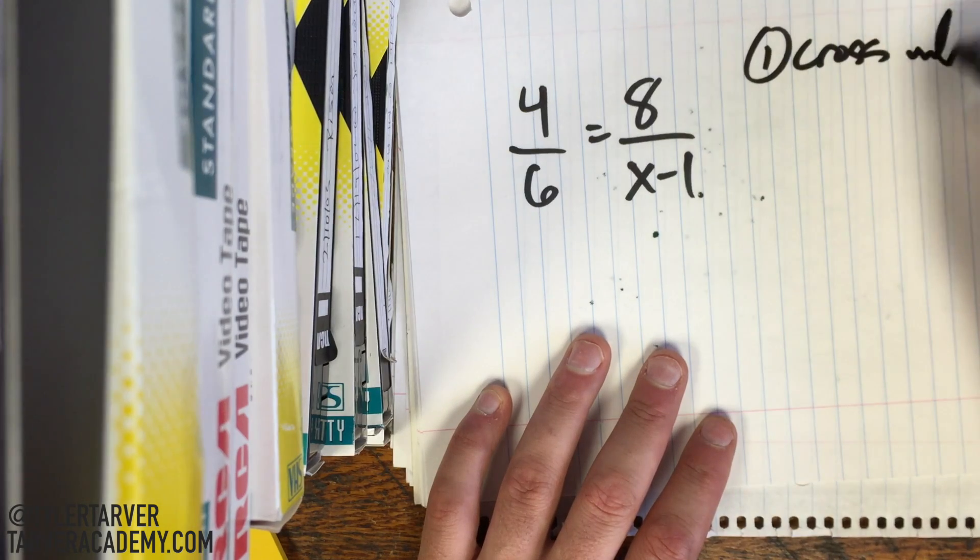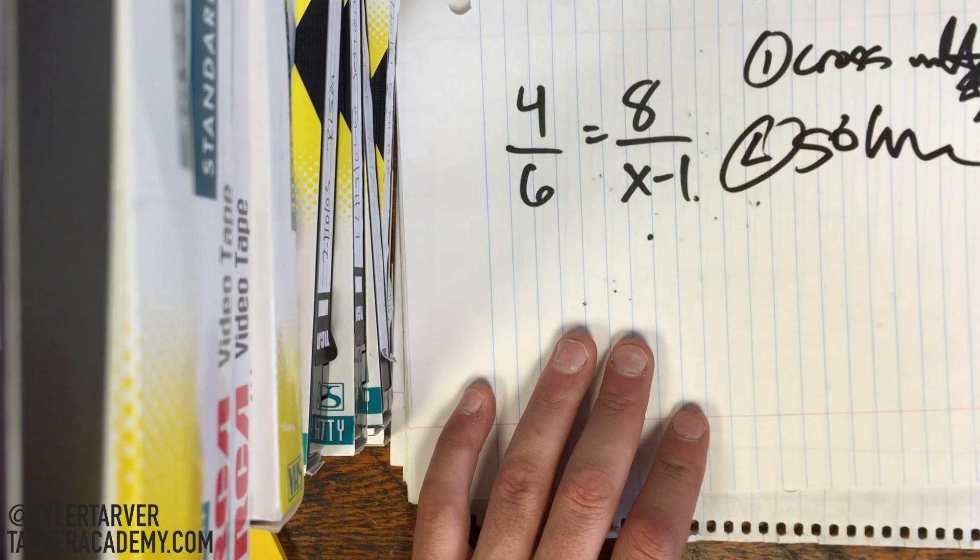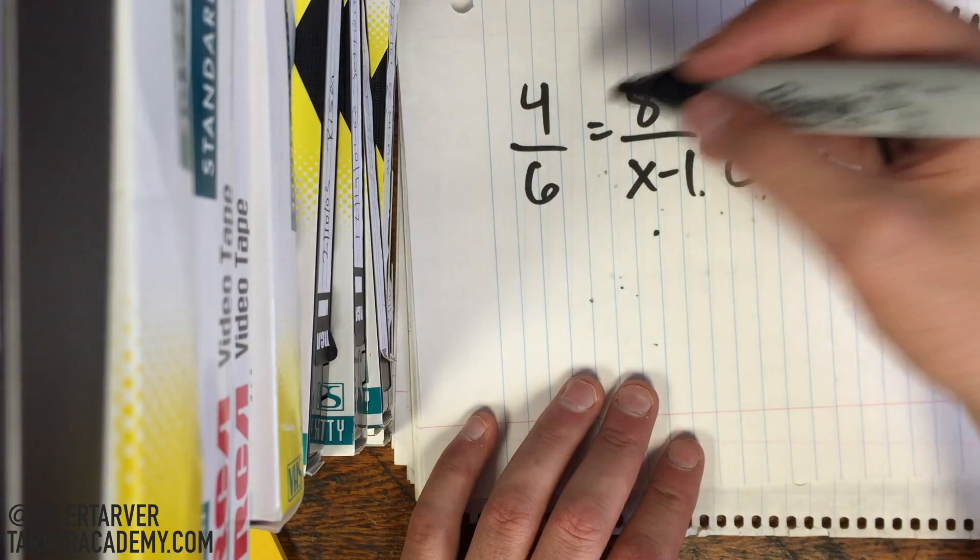Cross-multiply, multiply, and then solve, okay? Super good handwriting. So first we cross-multiply.